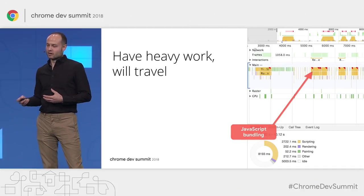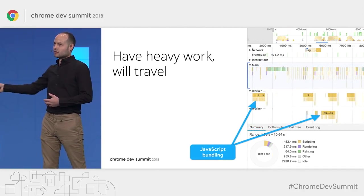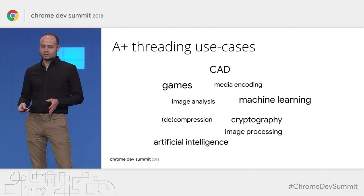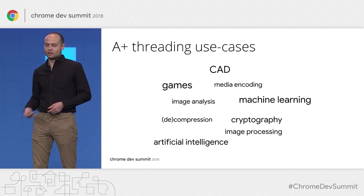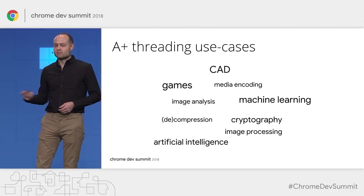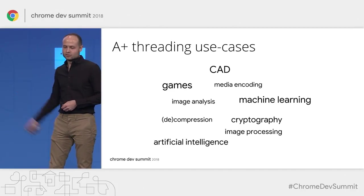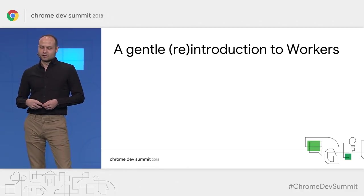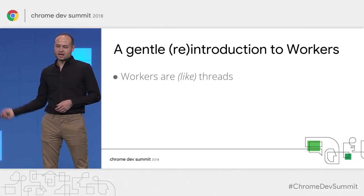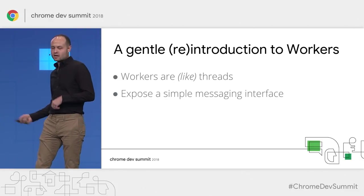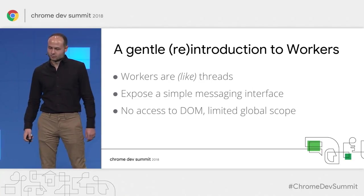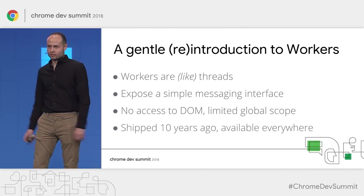Using background threads lets us offload that work off the main thread, so the main thread can keep handling input. Use cases that lend themselves extremely well to this include computer-aided design tools, games, encoding, AI, machine learning, and crypto — these are great places to start with threads. In the browser, our primitive for threading is the Worker. Workers are basically threads with a simple messaging interface. They have no DOM access whatsoever and a very limited global scope — basically just fetch and modules. They shipped around 10 years ago and are available essentially everywhere.